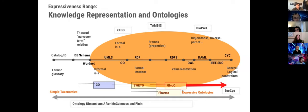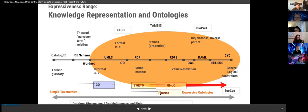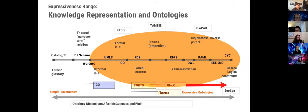These representations come from many different disciplines — computer science, logic, and others. In the middle you can see RDF. On the left side it's a weaker representation; on the right-hand side it is a stronger representation. But a stronger representation comes at the initial cost of creation, maintenance, storage, and many other things. There are pros and cons, and which one is right for you always depends.